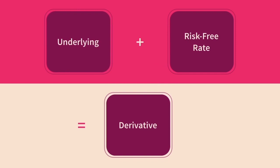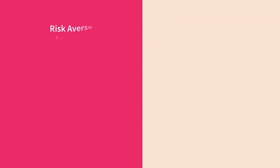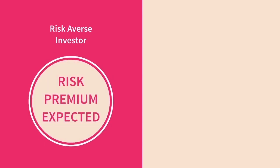Given that arbitrage must not be present in the market, an asset and its replicable components must be priced the same. Now we move on to risk neutrality. Investors can be classed based on their level of risk aversion. Most investors are said to be risk-averse, meaning that they expect a risk premium — an additional return above the level of risk they are taking on by entering into some particular position.